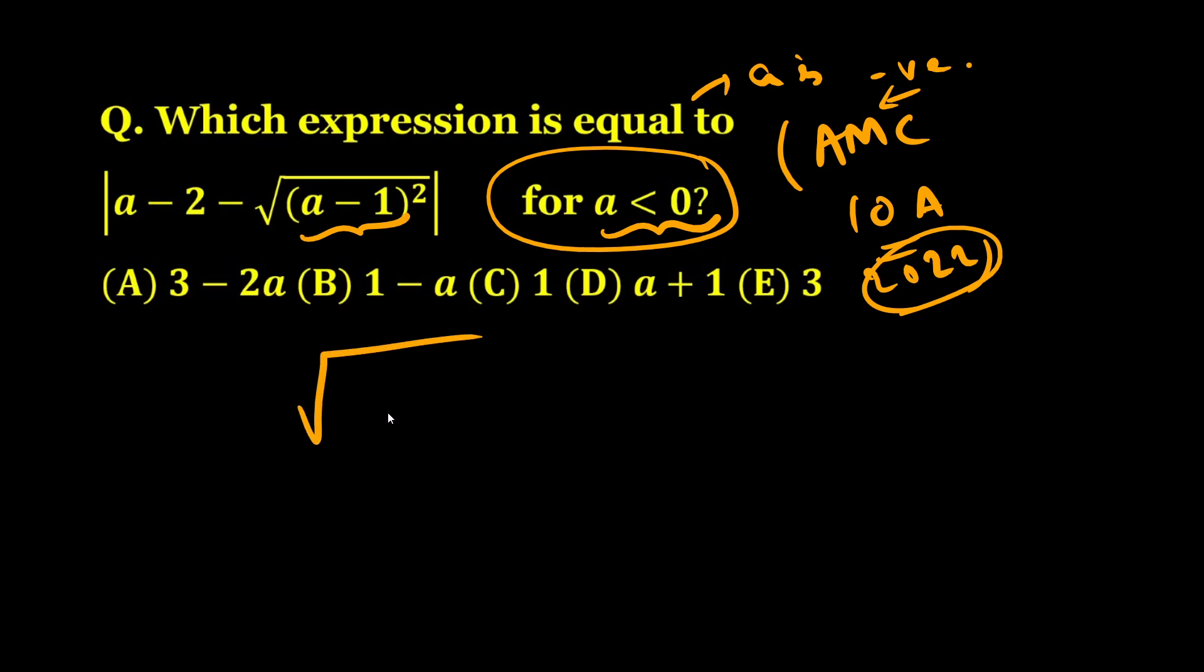First thing is that √(x²) equals |x|, not just x. I hope you remember this. The second thing is that |a| opens as a if a is greater than 0, and as -a if a is less than 0, because we have to make this value always positive.